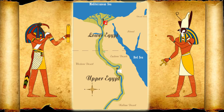In 3200 BC, ancient Egypt was not a united kingdom — it was divided into Upper Egypt in the south and Lower Egypt in the north. The terms Upper and Lower Egypt do not derive from where they are on a map, with north at the top.